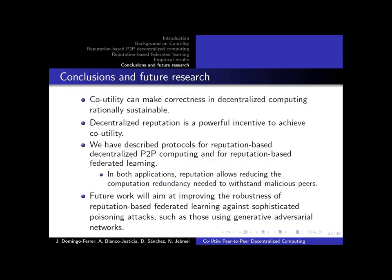To conclude, we can see that co-utility can make correctness in decentralized computing sustainable, requiring less redundancy than when not having reputations available. This decentralized reputation is a powerful incentive to achieve co-utility, and we have shown this using two protocols: one for generic computations in a decentralized peer-to-peer setting, and the other for federated learning. Future work will aim at improving the robustness of reputation-based federated learning against more sophisticated poisoning attacks. Thank you for your attention, and goodbye.